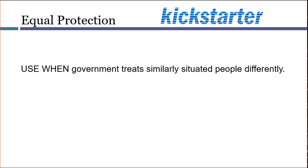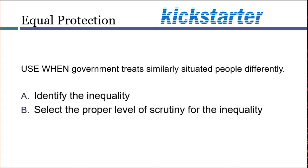Assuming there is some kind of inequality, I like to approach the question in three phases. First, identify the inequality and use some precision to ensure we understand what is being distributed unequally and who receives the benefits and the burdens of that unequal distribution. Next, select the proper level of scrutiny — this determines whether the court will take a deferential attitude toward the law or a more skeptical attitude. Finally, we apply the scrutiny.